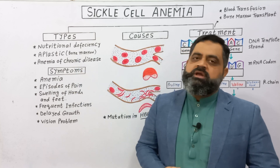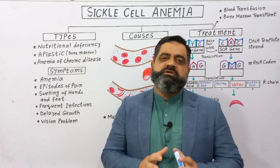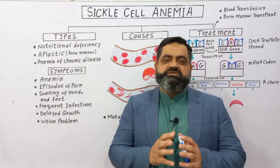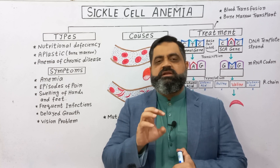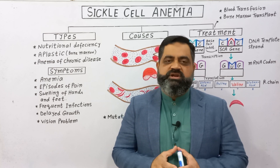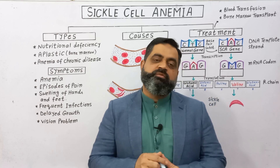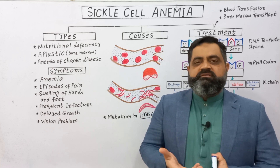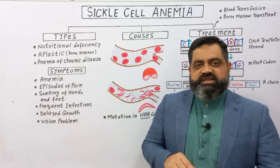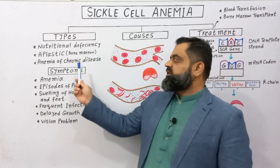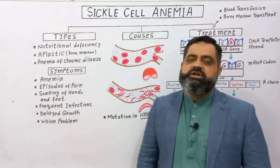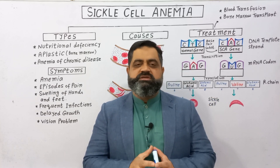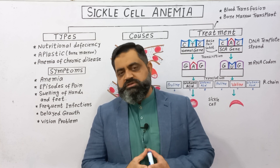The second type is aplastic anemia, which usually results from problems or defects in the bone marrow, because most red blood cells are formed in the red bone marrow of our bones. The third type is anemia of chronic disease — sometimes chronic diseases like kidney disease, liver disease, and other conditions can also lead to anemia.